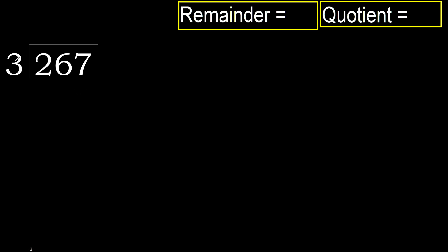267 divided by 3. 2 is less, so next we look at 26. 26 is not less, so we work with 26. 3 multiplied by which number is nearest to 26 but not greater? 3 multiplied by 9 gives 27, which is greater.